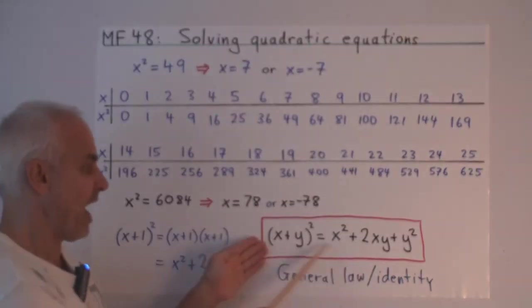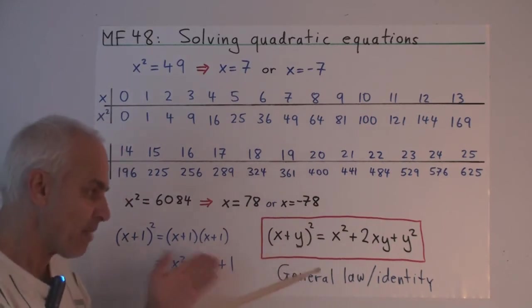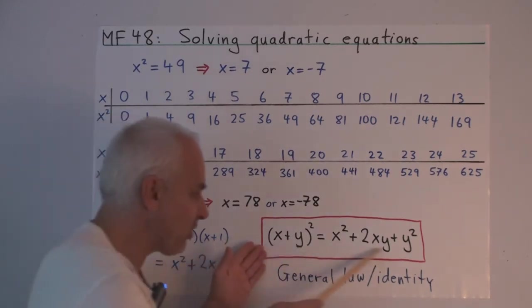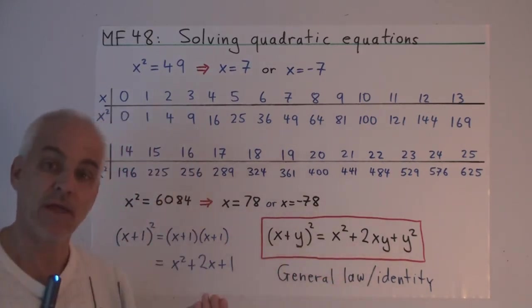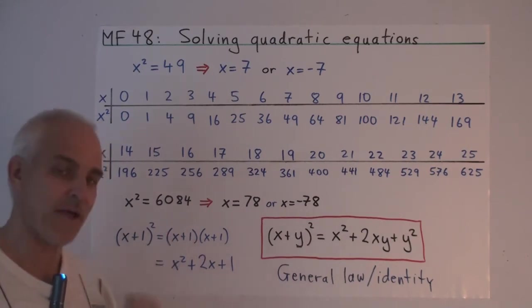I'm rather thinking of them as representing arbitrary or general numbers. So it's no longer a question of having a look at this and saying, what is x, what is y? x and y are not mystery numbers. This is a general law that applies to any x and any y. It's a slightly different usage of the letters x and y. We'll keep that in mind for later.